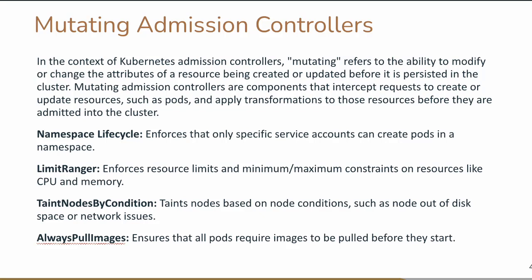With AlwaysPullImages, you can ensure that always the latest version of the image is deployed. This is where it is going to mutate the request to pull — so again it will be calling the mutating admission controller. These are some examples of mutating admission controllers. They help in modification of resources because the original request might not be in the required state, but it is actually modifying and making certain changes, which is why it is referred to as the mutating admission controller.